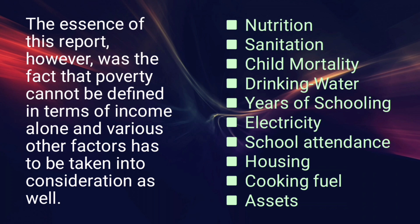Factors like nutrition, sanitation, child mortality rate, drinking water, years of schooling, electricity, school attendance, housing, cooking fuel, and assets were also taken into account for calculating MPI.